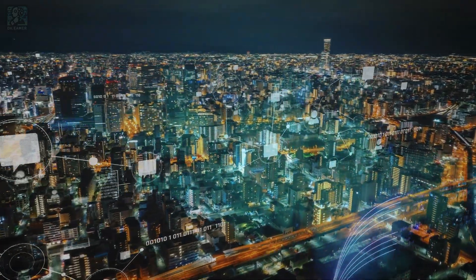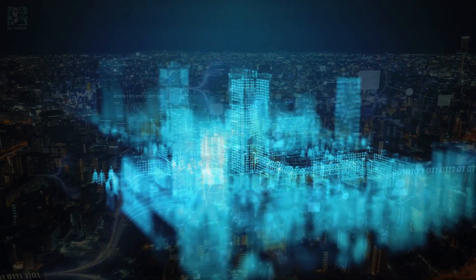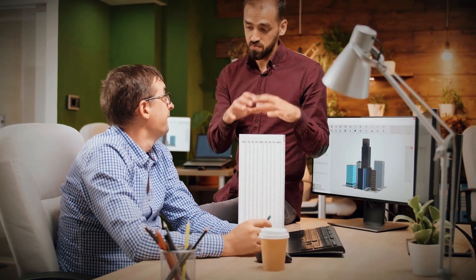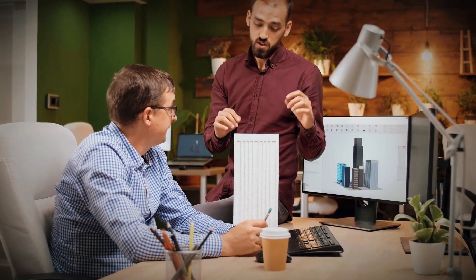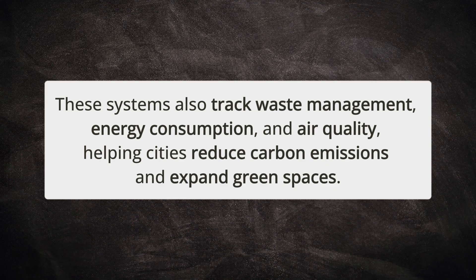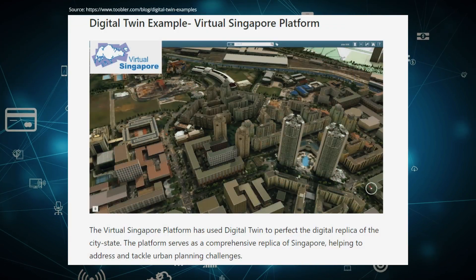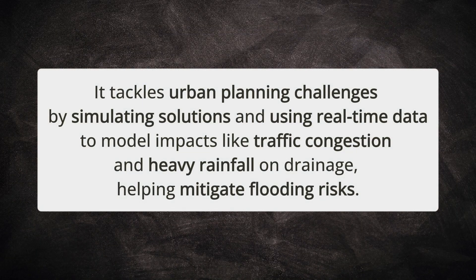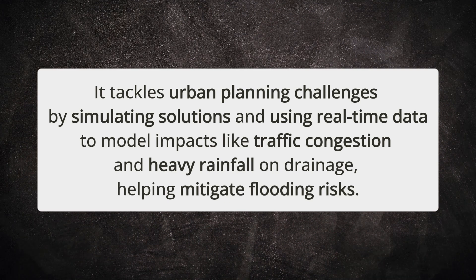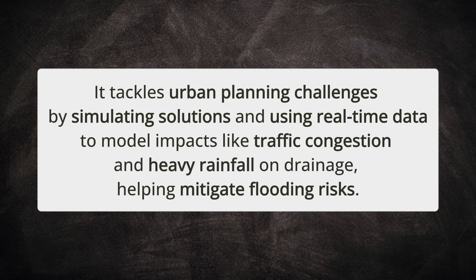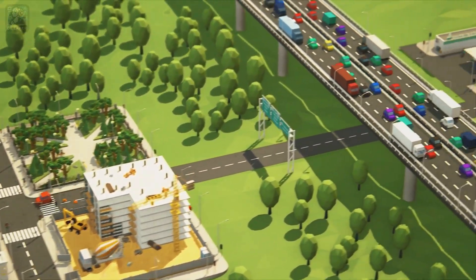Digital twins are revolutionizing urban development in smart cities by improving quality of life and optimizing resources. With IoT and analytics, urban planners design intelligent systems across sectors like energy and governance. These systems also track waste management, energy consumption, and air quality, helping cities reduce carbon emissions and expand green spaces. A prime example is the Virtual Singapore Platform, which creates a digital replica of the city-state, simulating solutions and integrating real-time data to model impacts like traffic congestion and heavy rainfall on drainage systems — helping to mitigate flooding risks. It's much like playing SimCity, but with real-world implications.